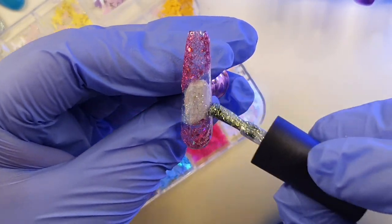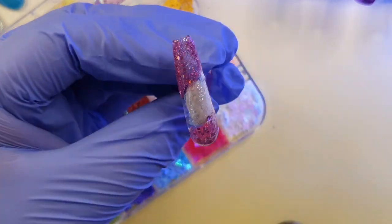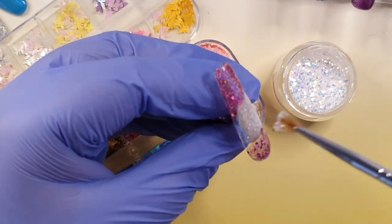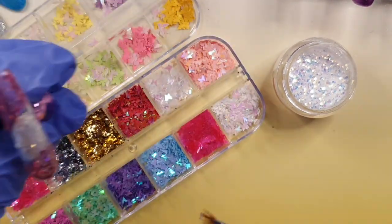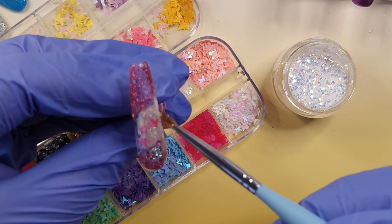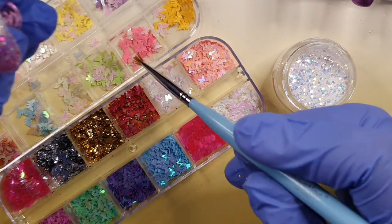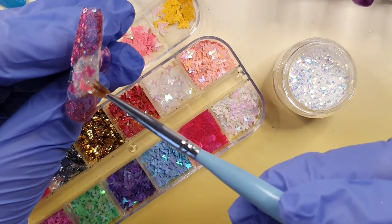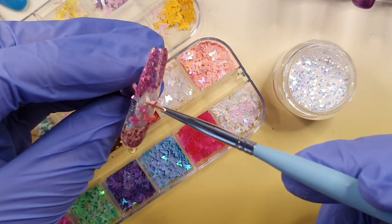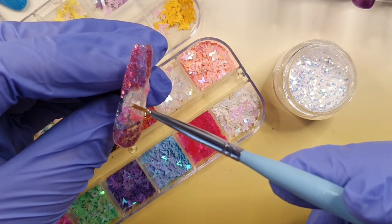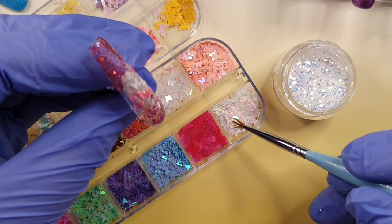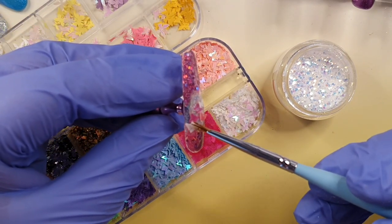I do this to every single nail. I put the gel polish on, I leave it wet, I add the glitter and the butterflies, then I cure before going in with some base coat. I add some gold leaf foil, I add some gold around the trim of the colored glitter gel polish.